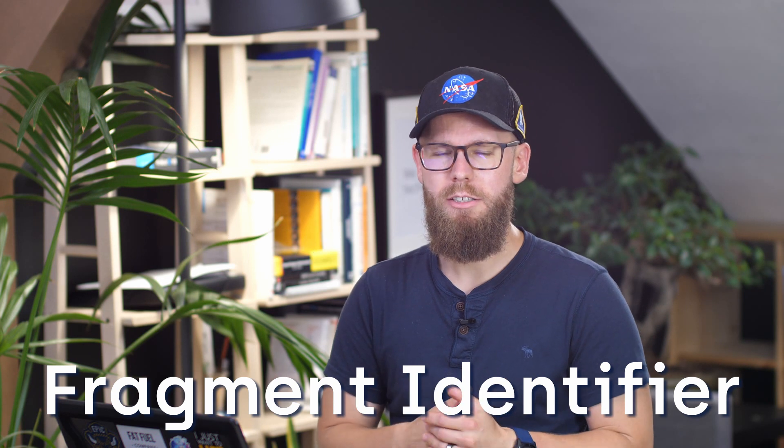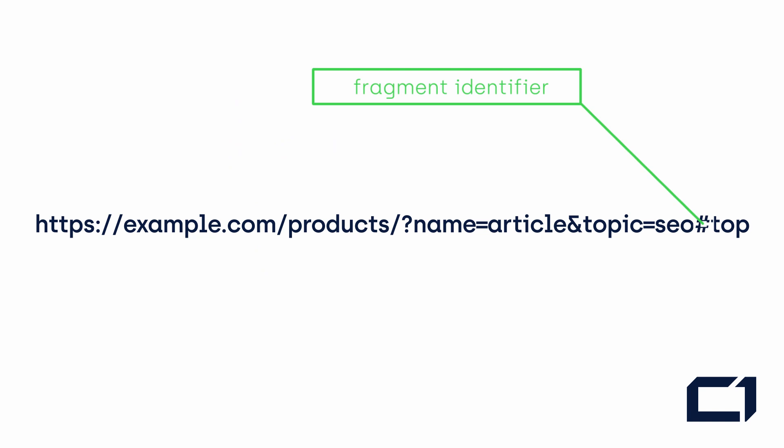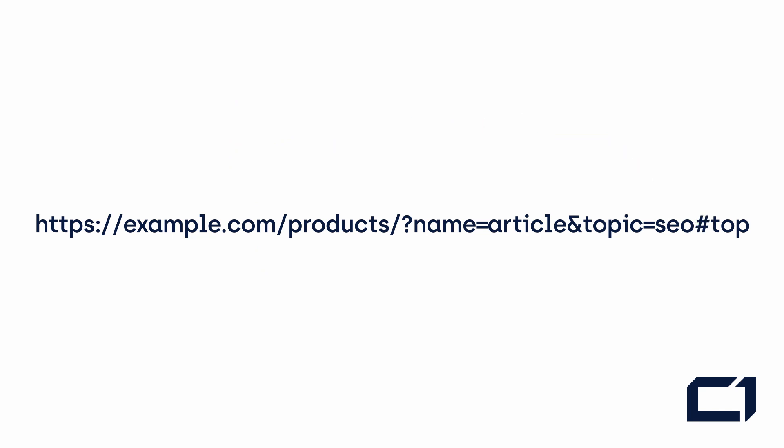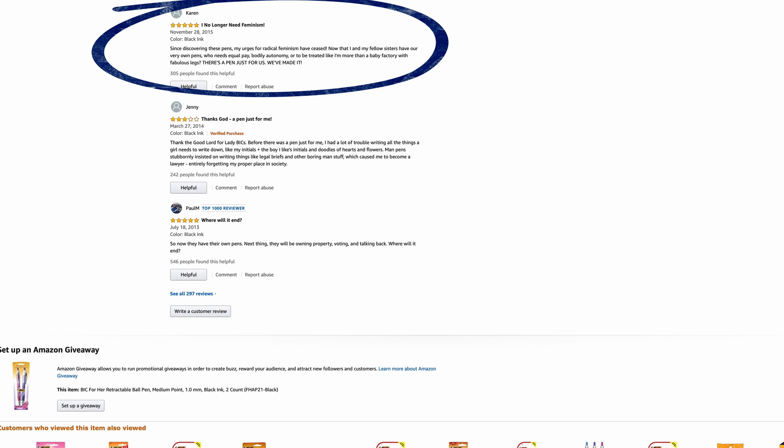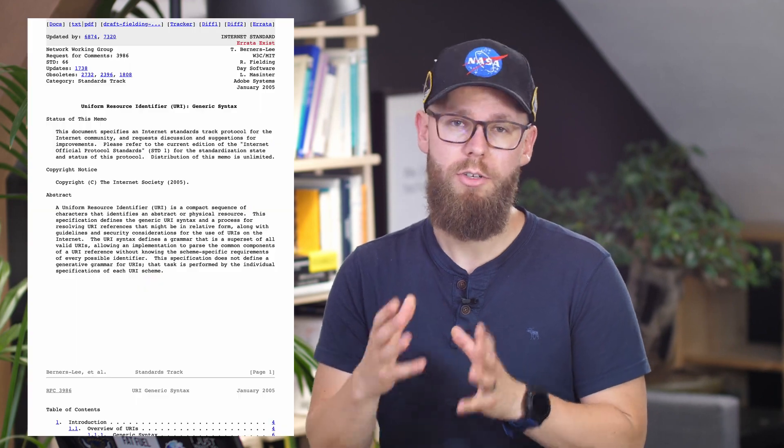Moving to the last part of the URL: the fragment identifier. This is something you use pretty often but probably aren't aware of. Most of the times if your friend sends you a link to an Amazon comment they found hilarious, you're going to get a link with a hashtag at the end — that marks that very specific comment, so when you click the link it scrolls down to that exact comment. Fragment identifiers aren't only used for hilarious Amazon comments — you can use them to link a specific section of a research paper to a friend so they don't have to scroll through the whole thing.